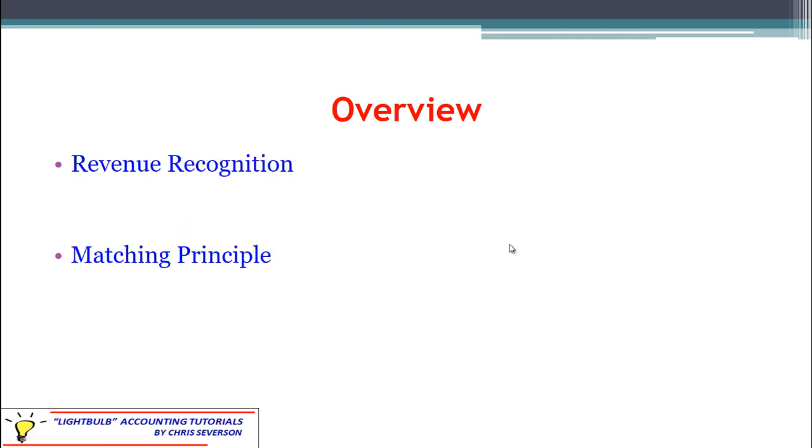That actually takes us to revenue recognition and matching. These are both underneath of the accrual basis of accounting. The revenue recognition essentially says we can record revenue when we've earned it, regardless of when we receive the cash, as long as there is a reasonable expectation that we will eventually receive the cash. It's not a guarantee. Later on, we'll talk about bad debts where we don't collect, but if there's a reasonable expectation that we will collect, we can count it as revenue in that period. There are different methods of revenue recognition for different types of companies, and we'll see those in later chapters.